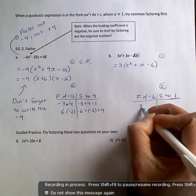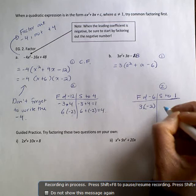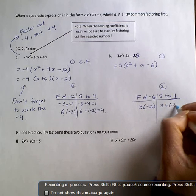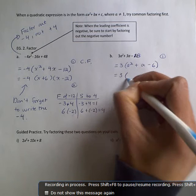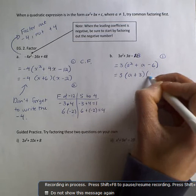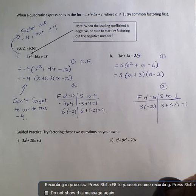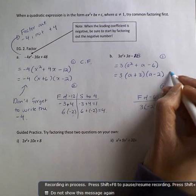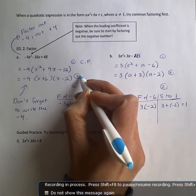So we're trying to find numbers that multiply to negative 6 and add to 1. So 3 times negative 2 multiplies to negative 6. And when I add 3 plus negative 2 together, I do get the positive 1. So those are my values. So it should say a plus 3 times a minus 2. And again, don't forget to write the 3 in that spot. And that was your third step.